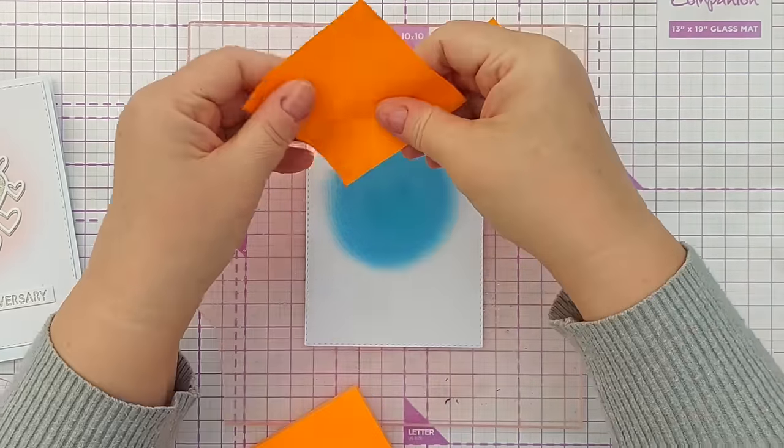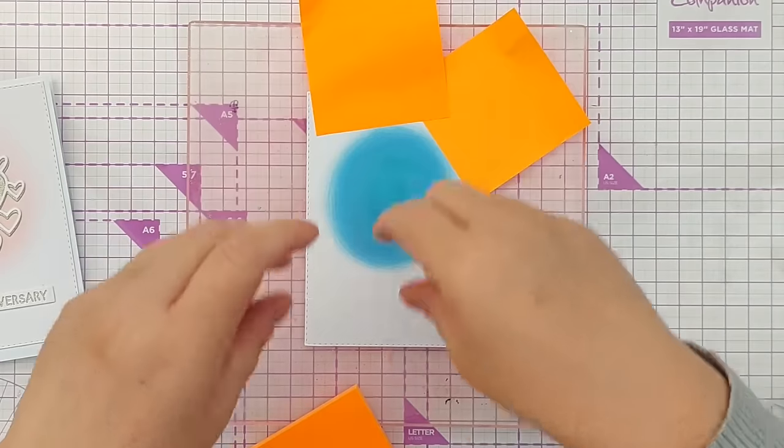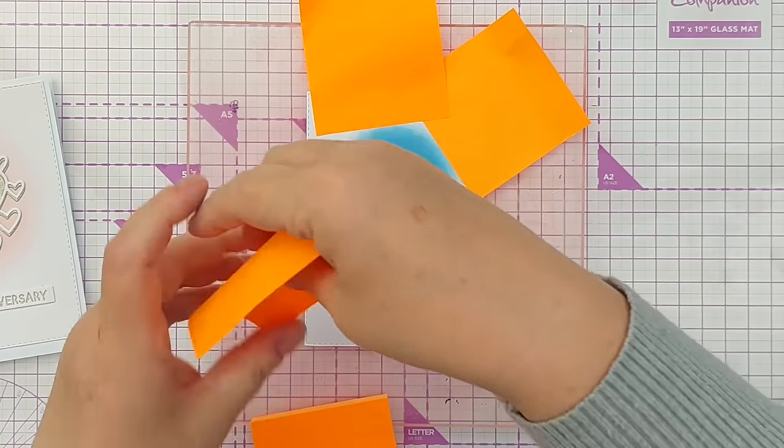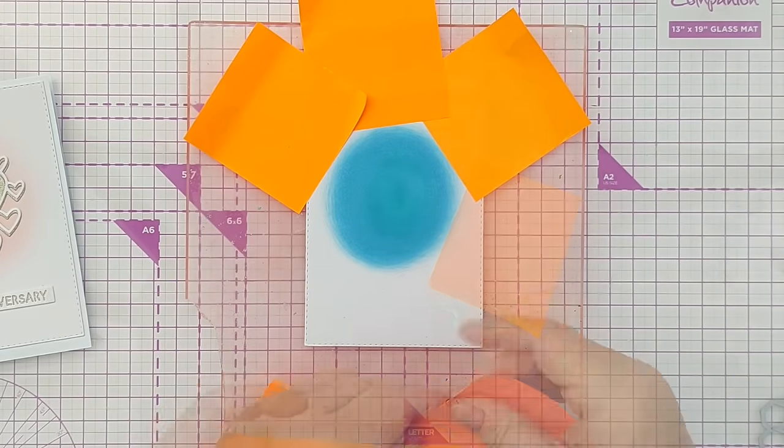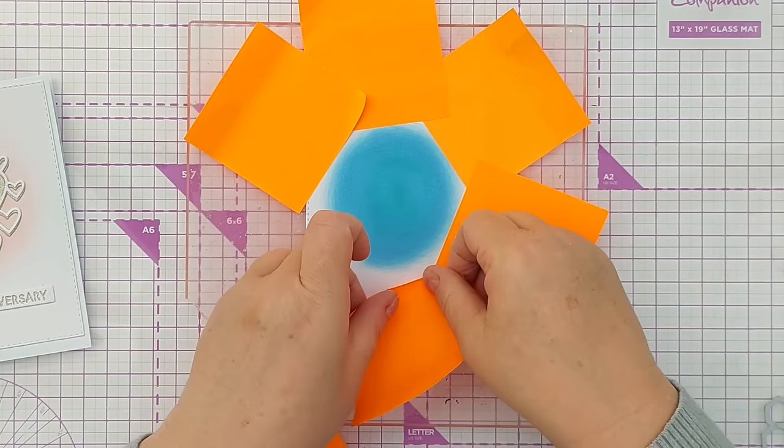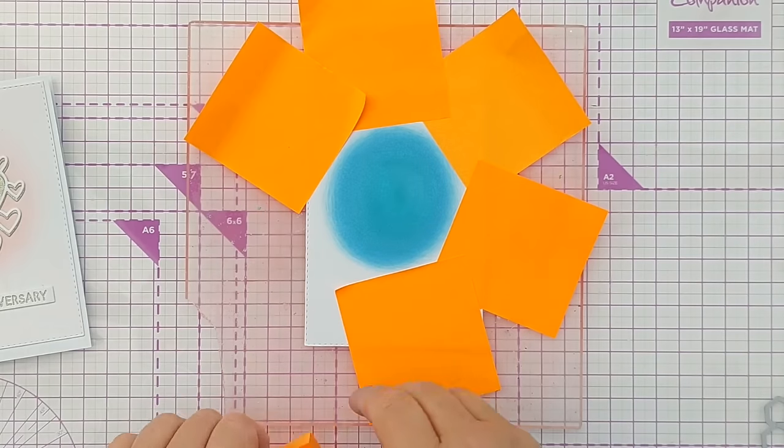With my heart card I didn't do anything else to the background but with this card I want to spatter on some metallic paint I think. I want to keep it restrained to the inky area.